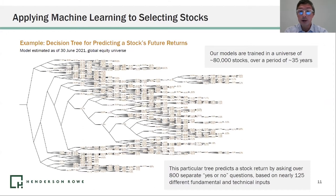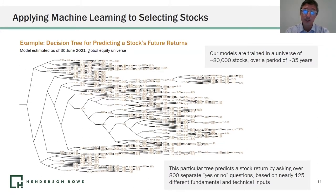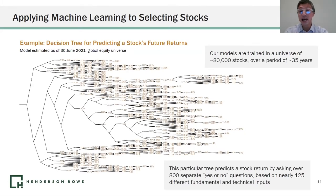It's a much bigger decision tree. Here we're asking over 800 different yes or no questions, and it's based on around 125 different variables that we've selected as input data.